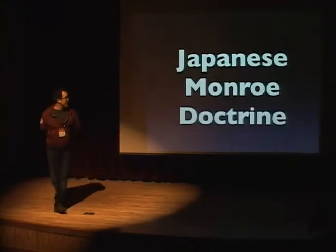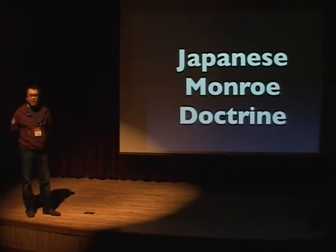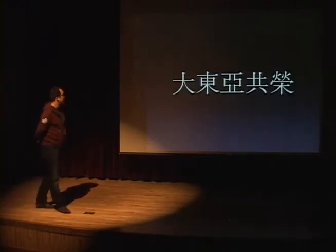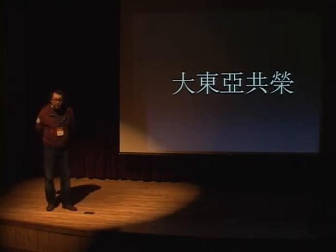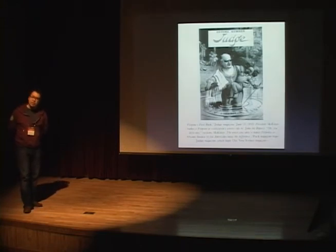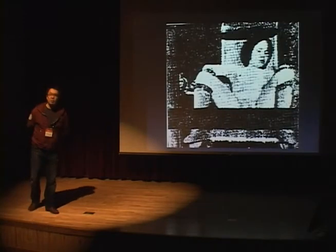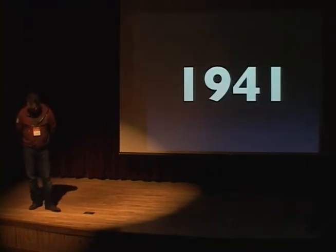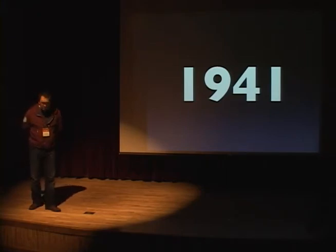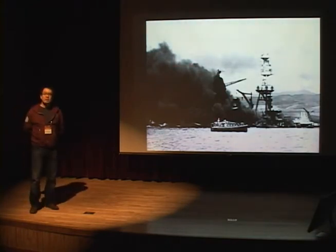In 1910, according to the Japanese Monroe Doctrine — that Japan would go west and take over all the countries — Japan expanded across Asia. The Japanese considered all Chinese, Korean, and everyone in Asia as animals. And that's why we had sex slaves.